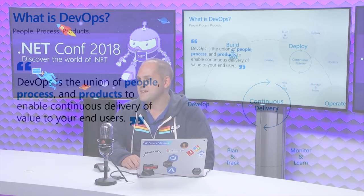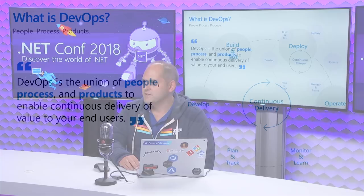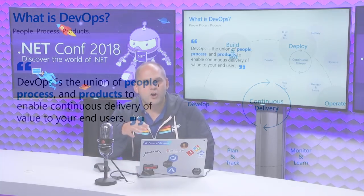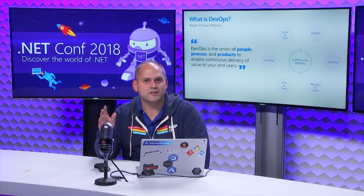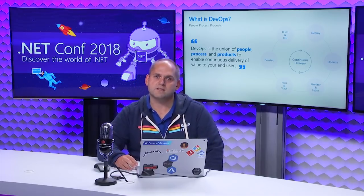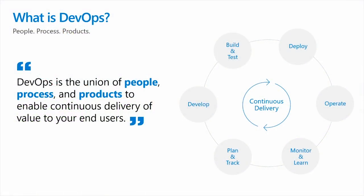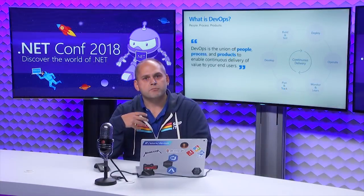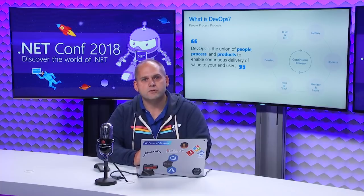What do we think DevOps is? It's useful to level set on this first. DevOps is not a product. DevOps isn't technology. DevOps is the whole process — it's about people, process, and products, allowing you to give continuous delivery of value to your end users.